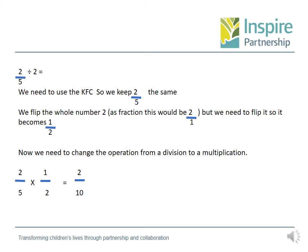Now we need to change the operation from a division to a multiplication. So when you set your calculations out, this is how it's going to look. We've kept the 2 fifths the same. Then we look at this one — we have flipped it over because originally it was a 2, but now it becomes 1 over 2. And then we change our sign from a division to a multiplication. So to finally get our answer, we just follow the steps from your previous learning on multiplying fractions. It's 2 multiplied by 1 is 2, and 5 multiplied by 2 is 10. So our final answer is 2 tenths.